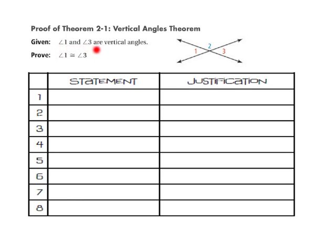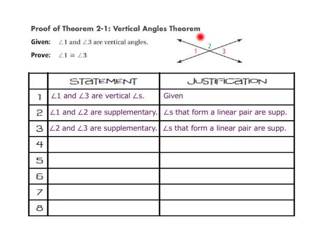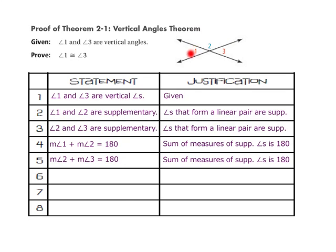Let's take a look at a two-column proof for the vertical angles theorem. In this proof, we are given that angle 1 and angle 3 are vertical angles, and we want to prove that angle 1 is congruent to angle 3. Step 1: angle 1 and angle 3 are vertical angles — given. Step 2: angle 1 and angle 2 are supplementary, because angles that form a linear pair are always supplementary. Step 3: angle 2 and angle 3 are supplementary, because angles that form a linear pair are supplementary. Step 4: the measure of angle 1 plus the measure of angle 2 equals 180, because the sum of supplementary angles is 180. Step 5: the measure of angle 1 plus the measure of angle 2 equals the measure of angle 2 plus the measure of angle 3, by the transitive property of equality.